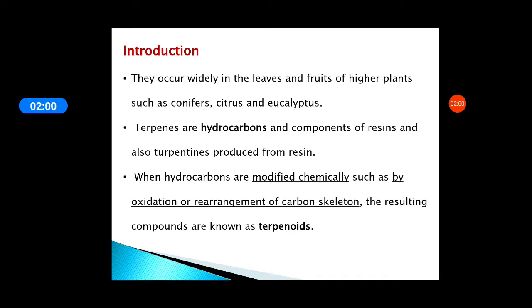Terpenes that contain only a hydrocarbon skeleton are called terpenes. When these hydrocarbons are modified by oxidation or rearrangement of the carbon skeleton, the resulting compounds are called terpenoids. So, compounds with only a hydrocarbon chain are called terpenes, and if these hydrocarbons are oxygenated, then those oxygenated derivatives are called terpenoids.